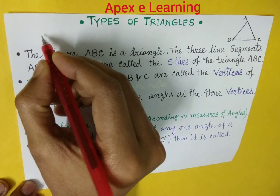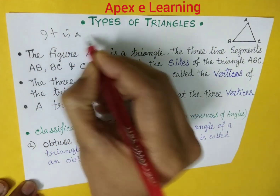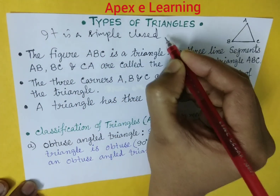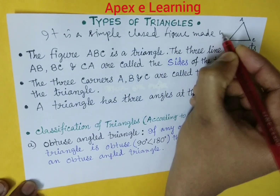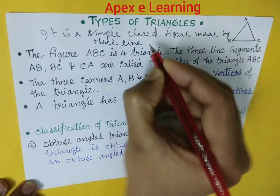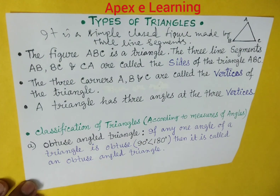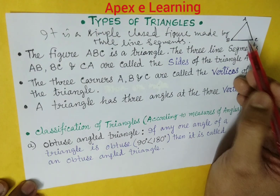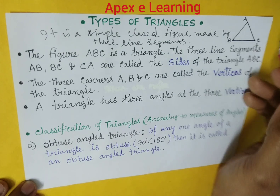Basically, a triangle is a simple closed figure made by three line segments — that is called a triangle. Let's see the figure or diagram. Figure ABC is a triangle. The three line segments AB, BC, and CA are called the sides of triangle ABC.